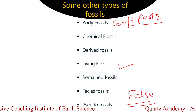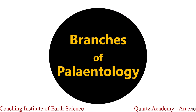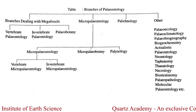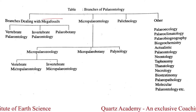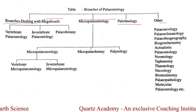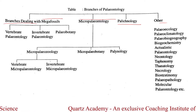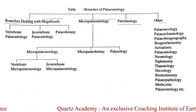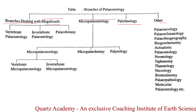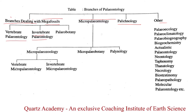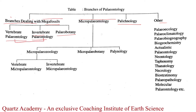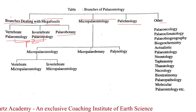Let's move to the branches of paleontology. Paleontology is divided into some branches by many authors — branches dealing with Megafossil, branches dealing with Micropaleontology, and branches dealing with Paleoecology and others. In Megafossil, authors divide the branches like Vertebrate Paleontology, Invertebrate Paleontology, and Paleobotany. In many books, many authors consider Vertebrate and Invertebrate Paleontology as Paleozoology and Paleobotany.